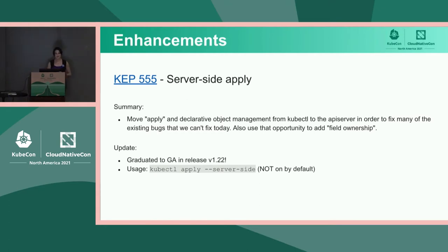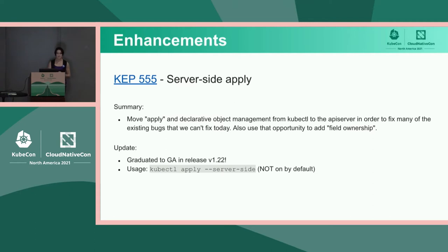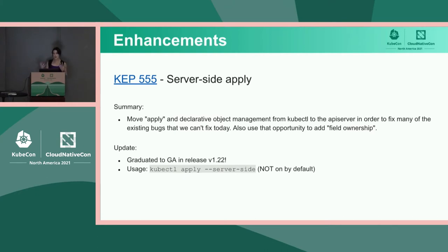Next up is server-side apply. This is very exciting — it graduated to GA in release 1.22. It's still not on by default, and there's an ongoing discussion about when and how to do that. But if you add the --server-side flag to your apply command, you will be using it, and I highly recommend that you do. The point is to move the implementation from the client side to the server side so that kubectl is not the only keeper of this important functionality. Other clients can take advantage of it as well. It also fixed a number of bugs that weren't possible to fix in the client-side implementation, and introduces a new concept of field ownership that allows multiple apply actors to collaborate better on object state, with proper conflict detection.